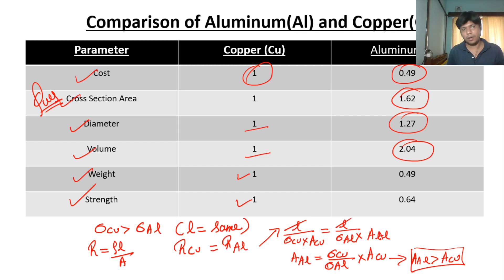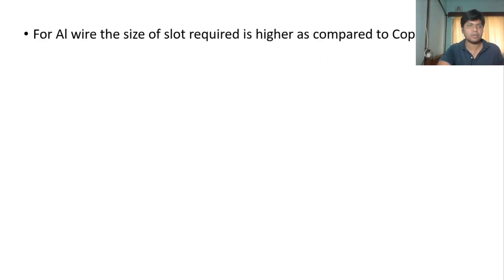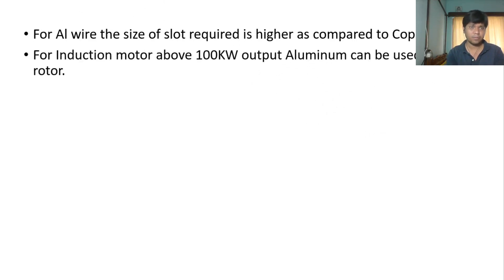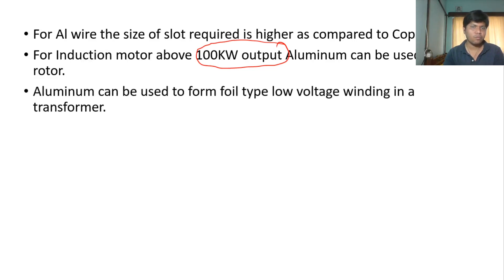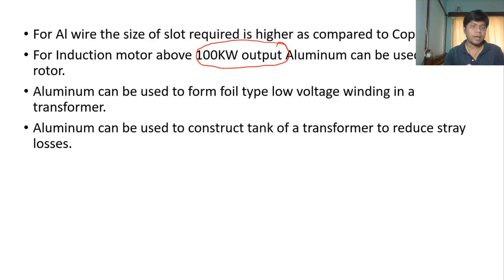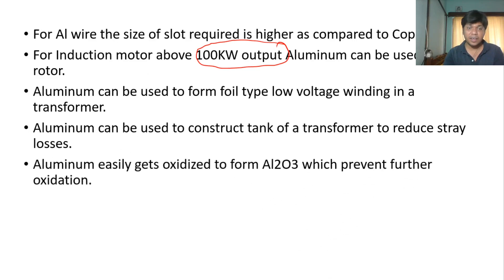Now let's look at some important practical comparisons between aluminium and copper. First, for aluminium wire, the size of slot required is higher compared to copper. Second, for induction motors above 100 kilowatt output, aluminium can be used for cage rotors. Third, aluminium can be used to form foil-type low-voltage winding in a transformer. Fourth, aluminium can be used to construct the tank of a transformer to reduce stray losses. Finally, aluminium easily gets oxidized to form Al₂O₃, which prevents further oxidation.